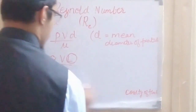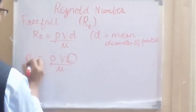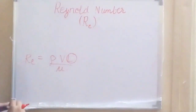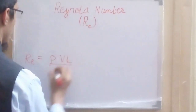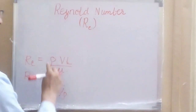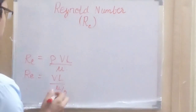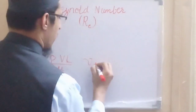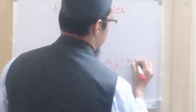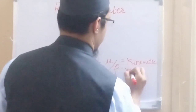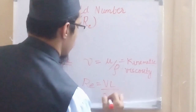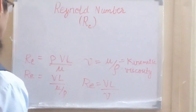This basic formula of Reynolds number can further be modified in terms of kinematic viscosity. We can write Reynolds number as v·l divided by (mu/rho). The term mu divided by rho is known as kinematic viscosity, represented as nu. So in that case we can represent the Reynolds number as v·l divided by nu.